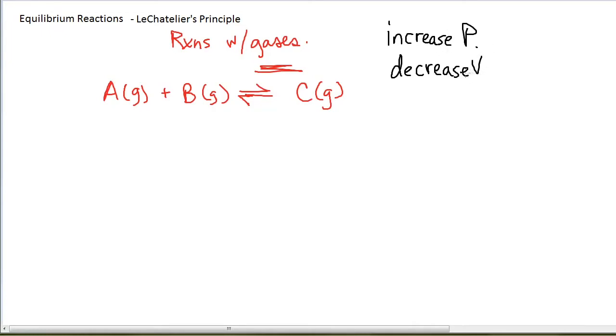so either of these effects would affect this reaction that involved gases, and it would make the reaction want to shift to the side with fewest moles of gases. Your stress on the gas of an increasing pressure or a decreasing volume is to contain the gas in a smaller area or to force it to bounce against the wall more.